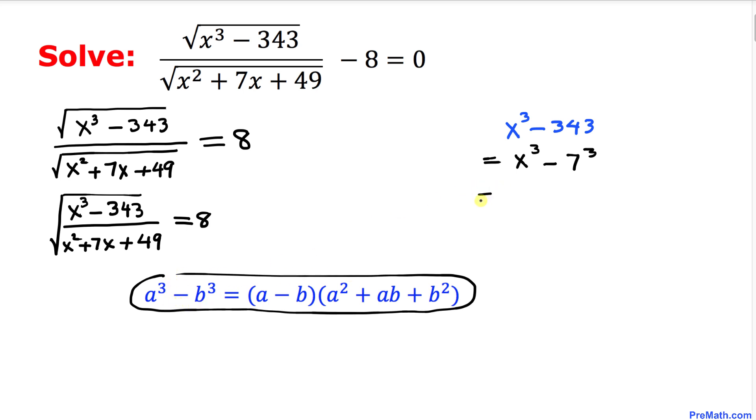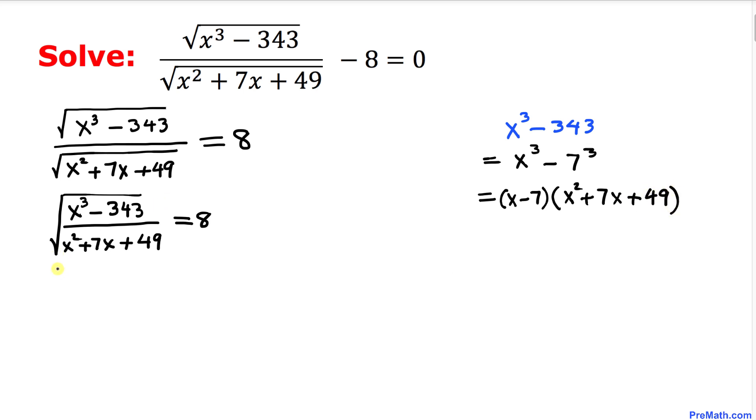This could be written as (x - 7) times (x² + 7x + 49). So now let's revert back to our original equation. We can write this numerator part by these factors.